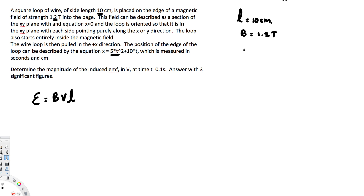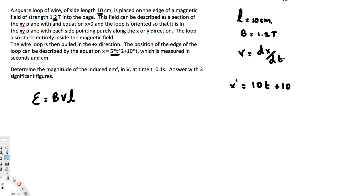Velocity is the derivative of position. So we find dx/dt. The position function is x = 5t² + 10t, so taking the derivative gives us v = 10t + 10. This is the velocity expression.